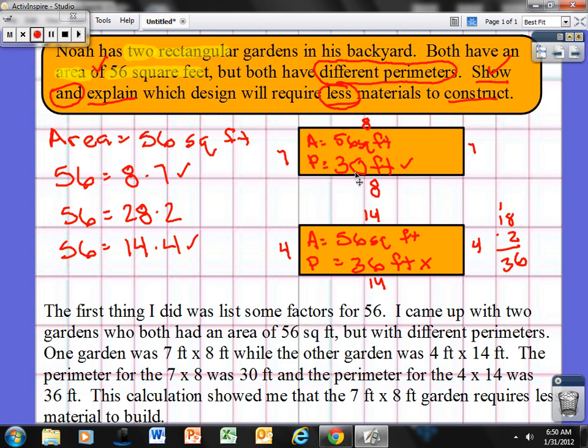OK, this automatically - I can tell that this requires less material. So I'm going to read back my explanation to make sure it makes sense. The first thing I did was list some factors for 56. I came up with two gardens who both had an area of 56 square feet, but with different perimeters. One garden was 7 feet by 8 feet, while the other garden was 4 feet by 14 feet. The perimeter for the 7 by 8 was 30 feet, and the perimeter for the 4 by 14 was 36 feet. This calculation showed me that the 7 foot by 8 foot garden requires less material to build. I think I have it all covered.